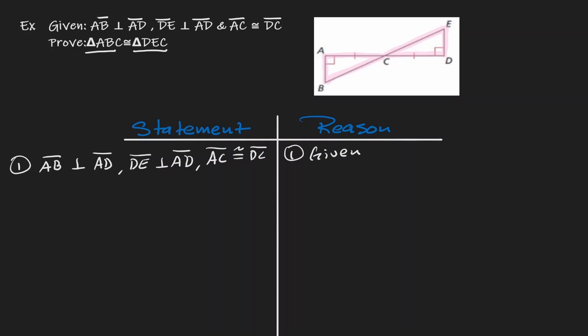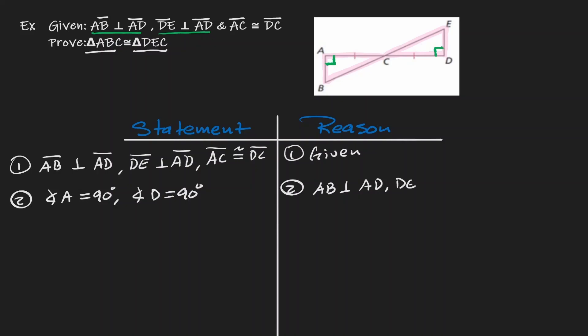Let's go one statement at a time. If AB is perpendicular to AD, then their intersection is 90 degrees, so angle A is 90 degrees. And if DE is perpendicular to AD, then we have another 90 degrees, so angle D is 90 degrees as well. The reason is that AB is perpendicular to AD, and DE is perpendicular to AD.